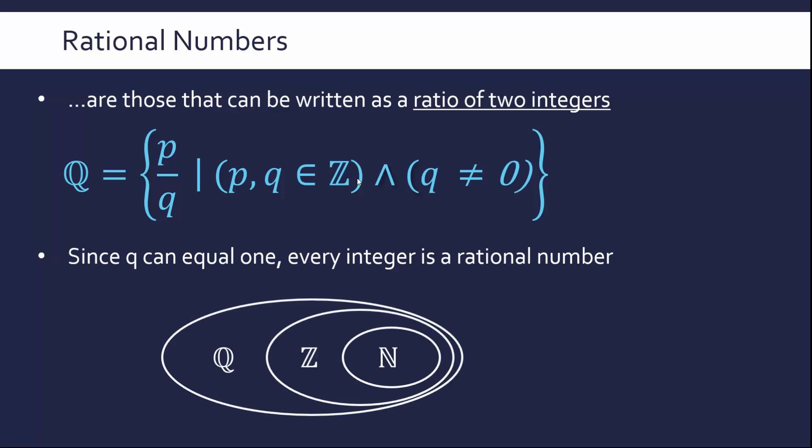Again using our nice visual representation, we can think of having our integers within our rational numbers, and within our integers we've got natural numbers as well. Our integers Z are also a proper subset of our rational numbers Q because we've also got numbers which are rational but are not integers. For example, 2.5 is a ratio of five divided by two. 2.5 isn't an integer, therefore it's belonging only to the rational numbers, not to the integer numbers.